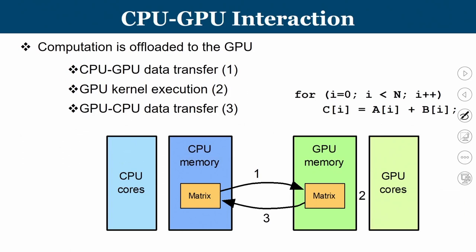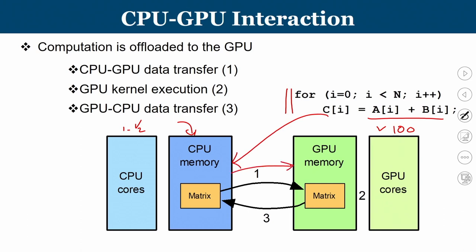Let us now understand the interaction between a GPU and a CPU. Looking at the matrix addition code we discussed previously — where elements of matrix A are added with elements of matrix B to produce result C — we have CPU cores and GPU cores. Initially the program starts from CPU memory where the matrix values are stored, then the relevant matrix is transferred into the GPU's memory, and the GPU cores take the appropriate data to perform the task and store the result back.